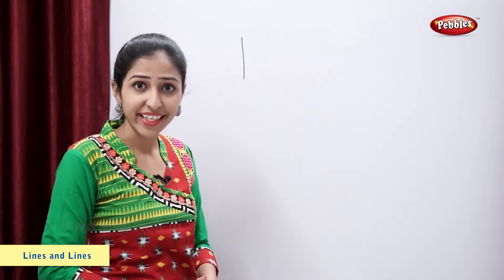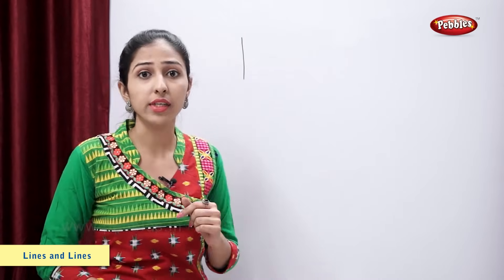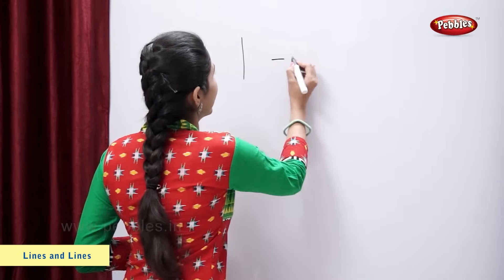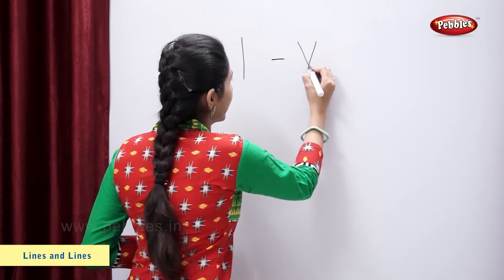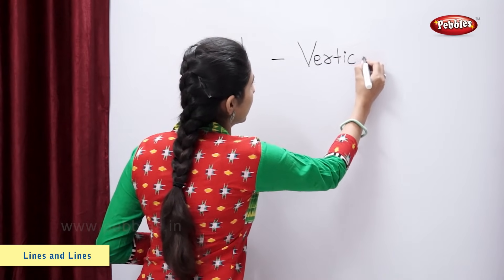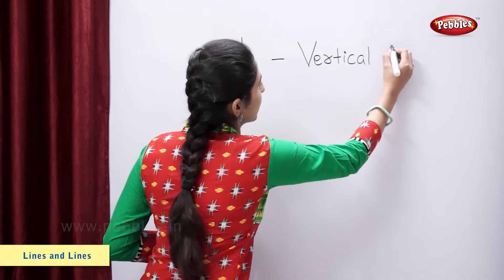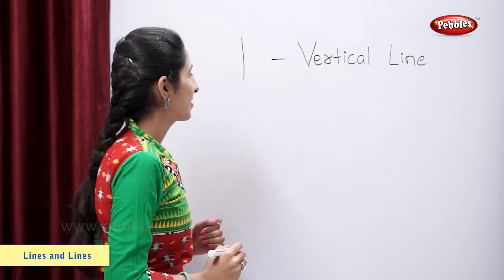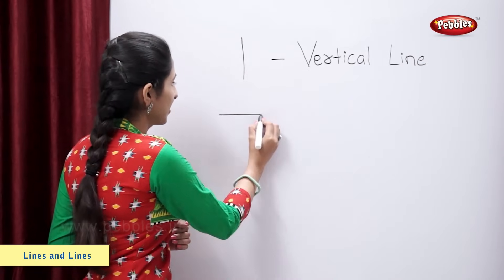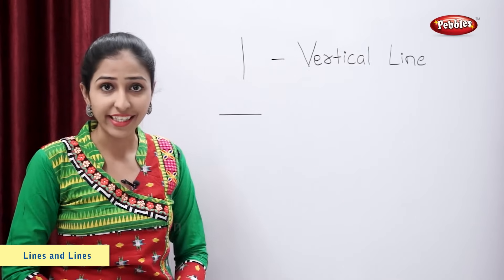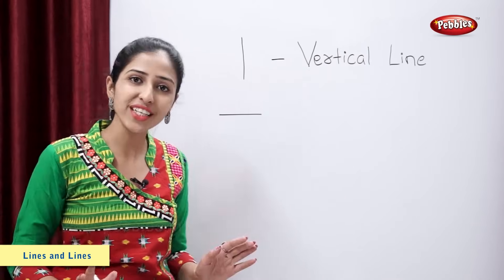This is a standing line. Remember students, a standing line is also called a vertical line. This is a sleeping line. A sleeping line is also called a horizontal line.